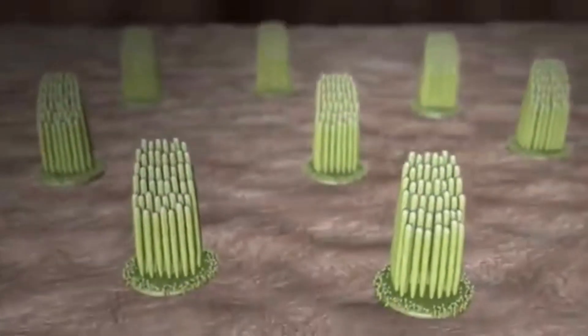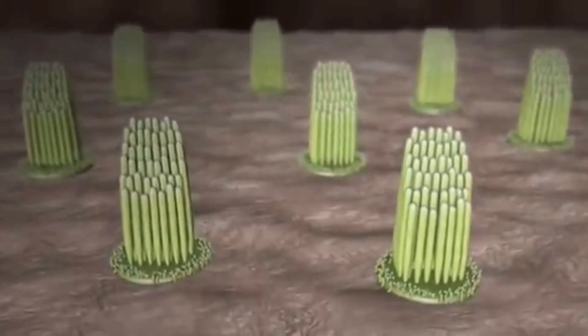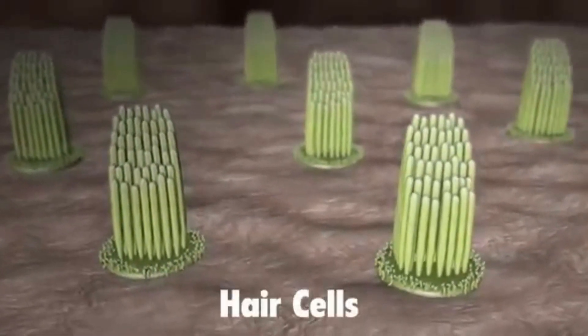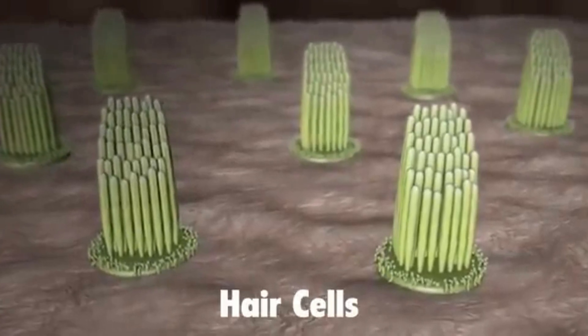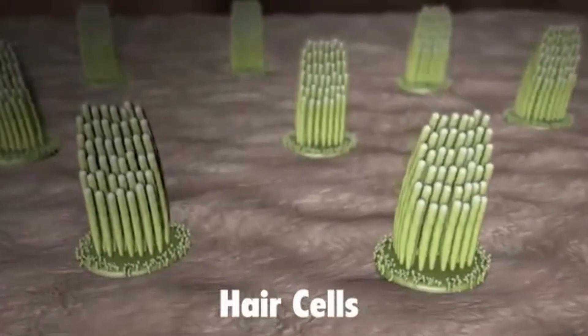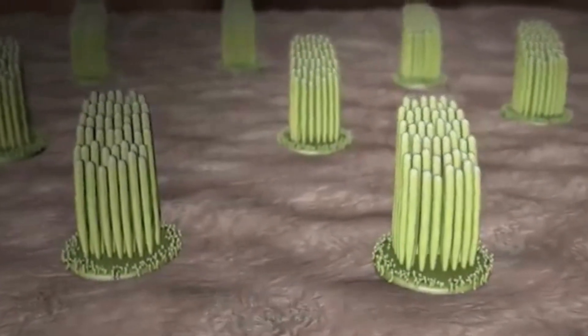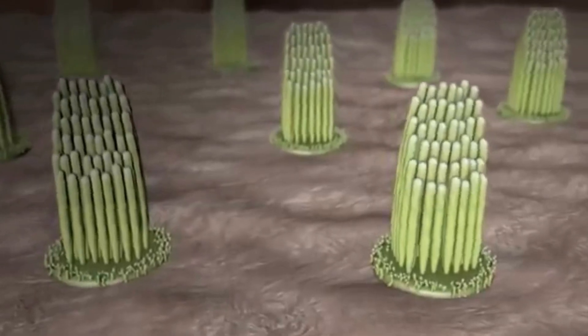Hair-like structures called stereocilia sit on top of hair cells and are grouped together as hair cell bundles inside the cochlea. The hair cells inside the cochlea ride these waves, and the hair bundles are moved.